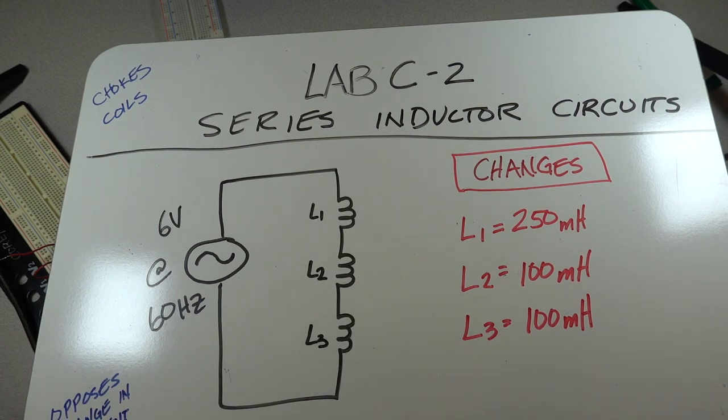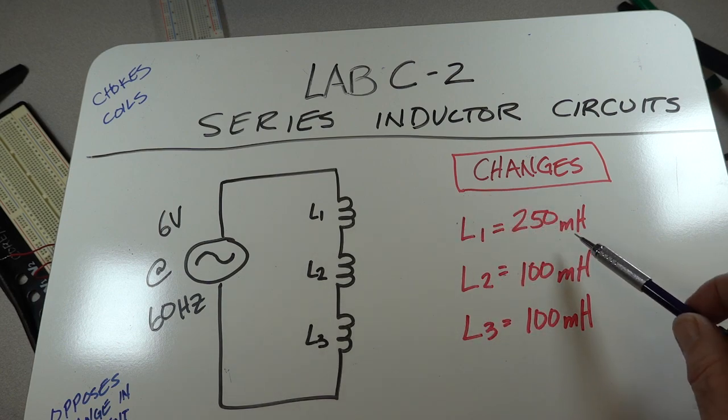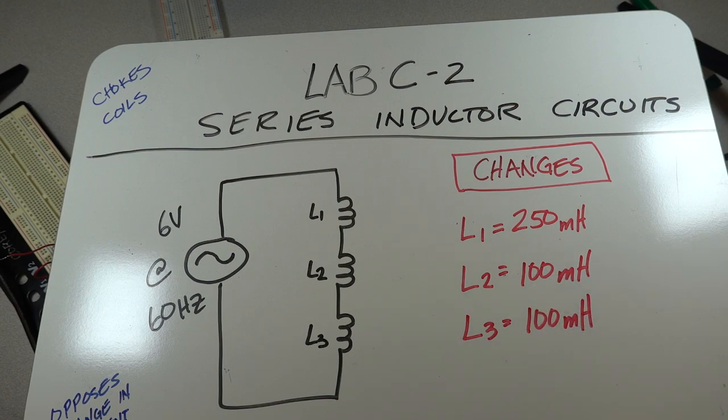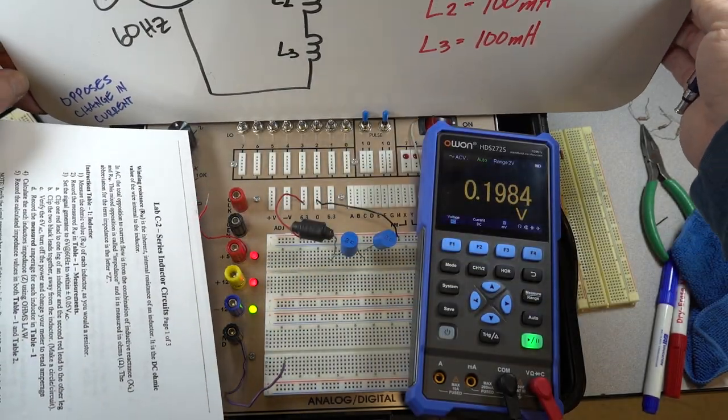Now there are some changes we're going to make to this laboratory, and those changes are over here on the right in red. We're going to change so that our L1 is going to be 250 millihenries, and L2 and L3 are going to be 100 millihenries. The reason we're going to do this is that these inductors tend to be a little bit more readily available. Some of the smaller inductors are not as easy to find, so we're going to use these because they're going to be more readily available.